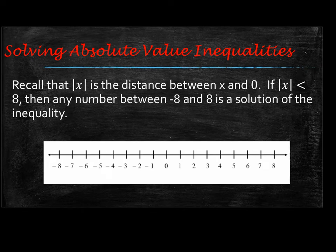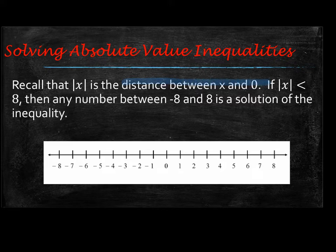When we're solving absolute value inequalities, I want you to remember that the absolute value of x is the distance between x and 0. Since two values have a distance of 8 in the example we're looking at, if the absolute value of x is less than 8, there are two numbers that have a distance of 8 from 0: negative 8 and positive 8. And so everything between those numbers would be a solution,